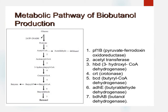In the glycolysis pathway, glucose is converted to pyruvate, then proceeds through acetyl-CoA, acetoacetyl-CoA, 3-hydroxybutyryl-CoA, crotonyl-CoA, butyryl-CoA, and finally butyraldehyde. At each stage, specific enzymes drive the conversion of these intermediates. Butyraldehyde is then converted into butanol by the enzyme butanol dehydrogenase, yielding our main desired product.